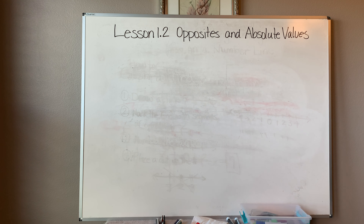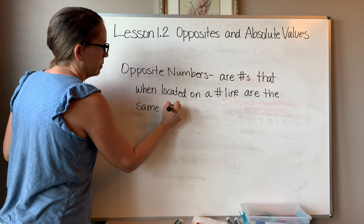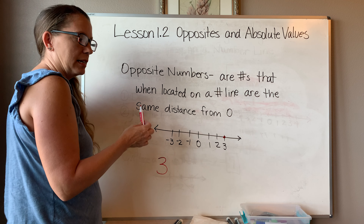We're going to learn what opposites are and what absolute values are. For opposite numbers, let's write down the definition: opposite numbers are numbers that, when located on a number line, are the same distance from zero.